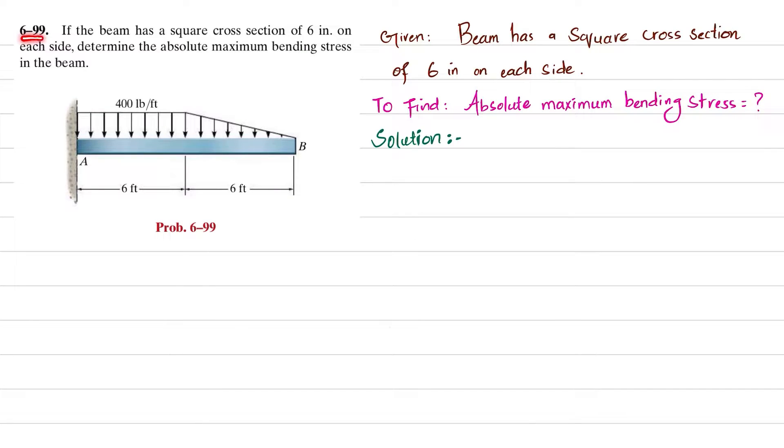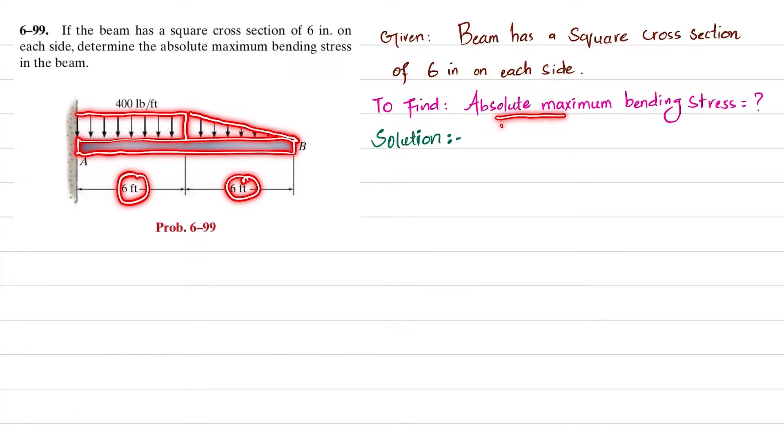Welcome back to Problem 6-99. The problem states: if the beam has a square cross section of 6 inches on each side, determine the absolute maximum bending stress in the beam. This is a cantilever beam with a uniformly distributed load of 400 pounds per foot over a length of 6 feet, and then a uniformly decreasing load over a distance of 6 feet. We need to find the absolute maximum bending stress. The cross section is a 6 inch by 6 inch square.